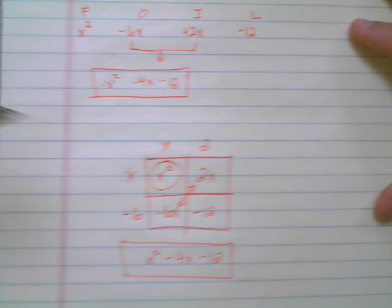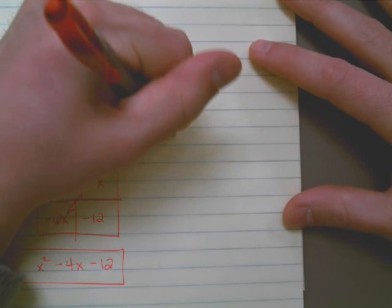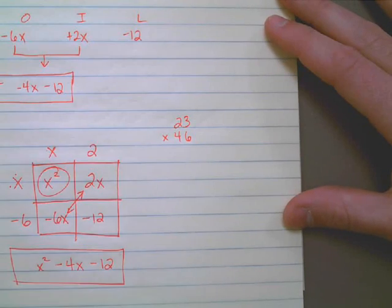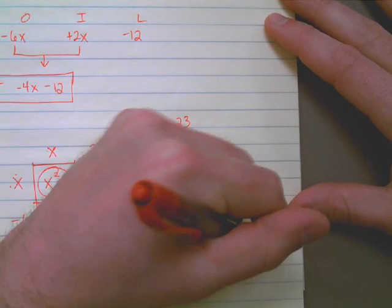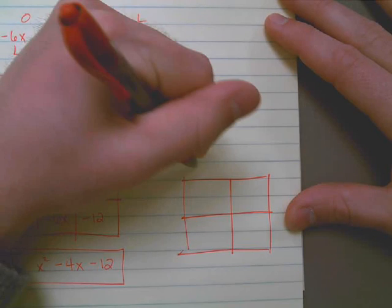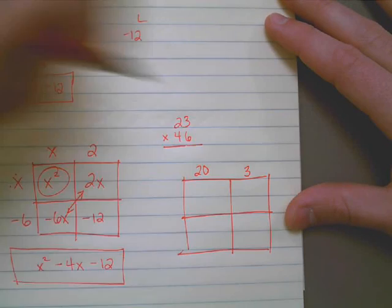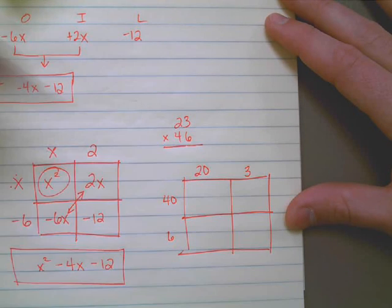This works also for something like, for instance, if we want to take the number 23 times 46, you could even go so far as to do something like this. I have 20 and then 3 more, and I'm going to add 40 plus 6 more.